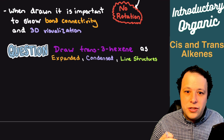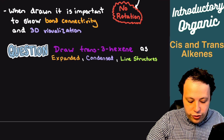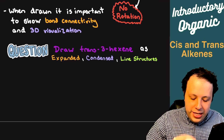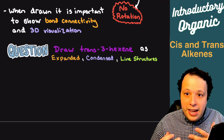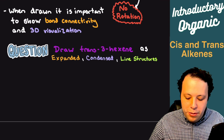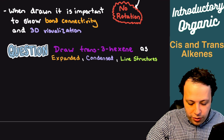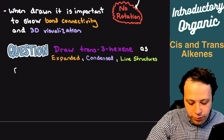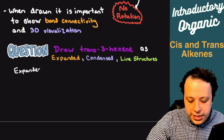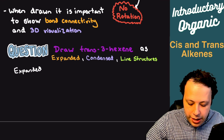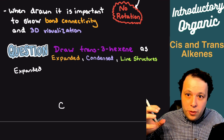The biggest thing when showcasing cis and trans is you need to give indications that you actually have that trans capability in the structure. What I personally like to do, starting with expanded, is start from the double bond and then draw my way outwards from it. I do the same thing with condensed.